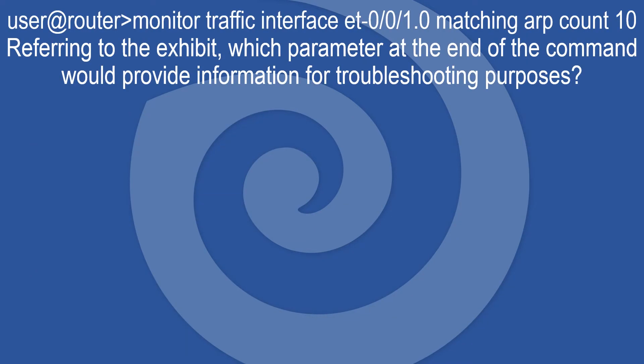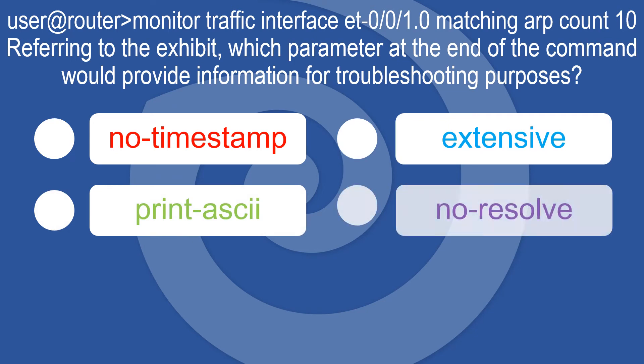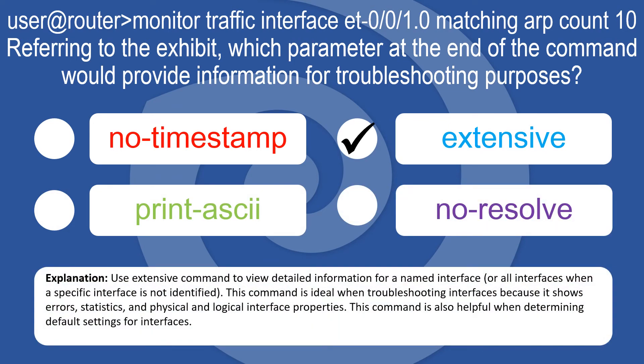Referring to the exhibit: the command is 'monitor traffic interface at-0/0/1.0 matching ARP count 10'. Which parameter at the end of the command would provide information for troubleshooting purposes? Options: No timestamp, Extensive, Print ASCII, No resolve. Use the extensive parameter to view detailed information for a named interface, showing errors, statistics, and physical and logical interface properties. This is also helpful for determining default interface settings.